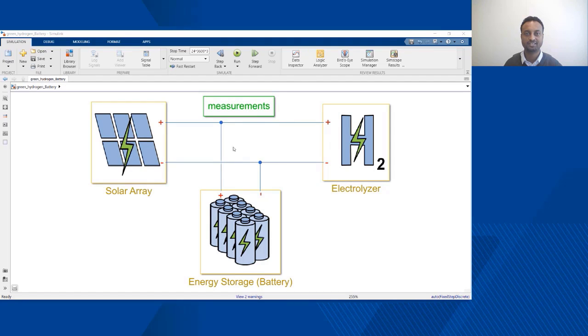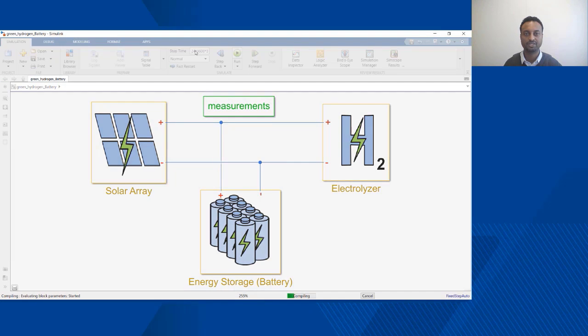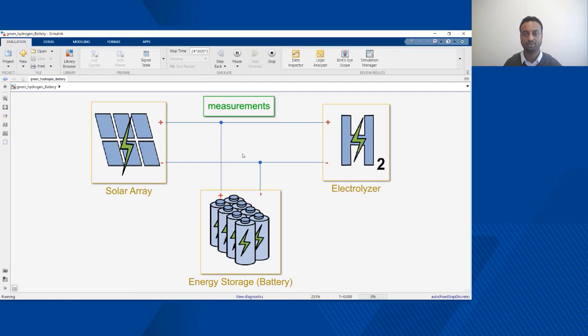Here I have a complete system model of a solar powered green hydrogen production with the solar array, the energy battery, and the electrolyzer. If you look at the parameter which is defined as stop time, I'm running a full three-day simulation in this scenario. One thing you will immediately observe is that the simulation is fast and I'm able to run a full three-day simulation in less than 10 seconds.